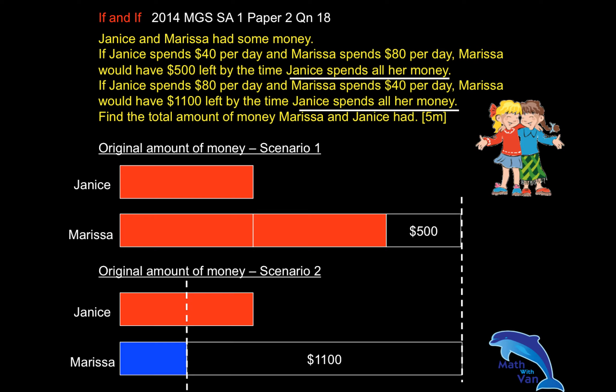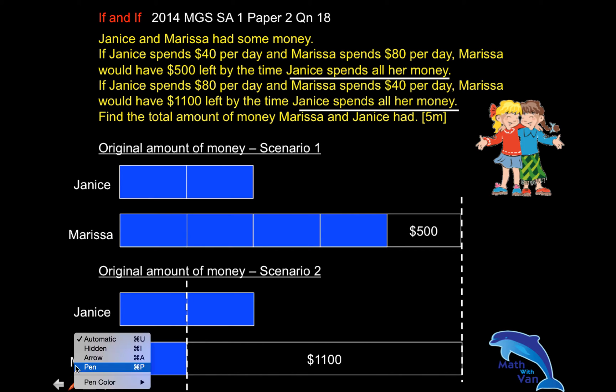We know that we cannot add the blue to the red. So should we change all to blue or all to red? I will change all to blue, because it's easier — I'm working with whole numbers and don't have to deal with fractions. From Scenario 2 we know Jenny's block is blue, and the red portion is double that of the blue. So change Jenny's accordingly, and likewise do the rest for Scenario 1. Now it's pretty obvious how to solve the question with just the model — we can use Marissa's model to solve.